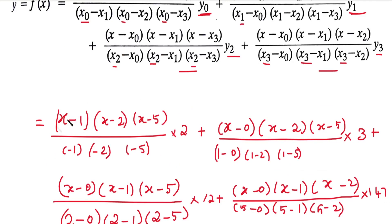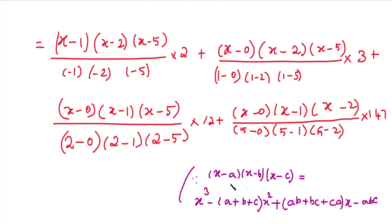Now we need to simplify. The numerator of each term has the form x minus a, into x minus b, into x minus c. Expanding this gives: x cube, minus a plus b plus c into x square, plus ab plus bc plus ca into x, minus abc. We use this formula to expand each numerator term directly.